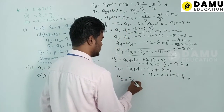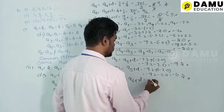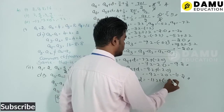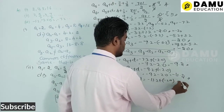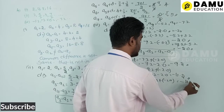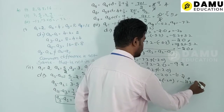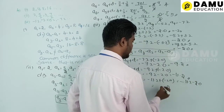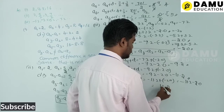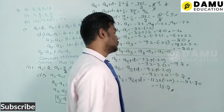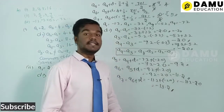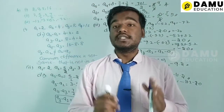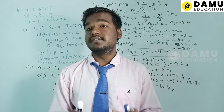Then a7 = a6 + d = −11.2 + (−2.0) = −11.2 − 2.0 = −13.2. These are the three more terms for the third series.